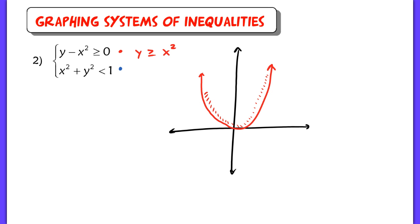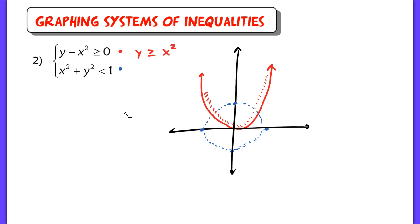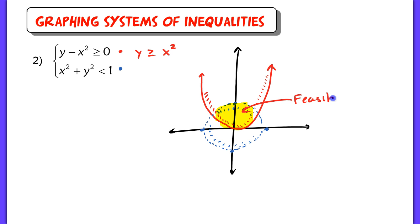The bottom inequality is a circle with a radius of 1. When I graph this, I should have a dashed line to represent the fact that this is just a less than symbol. I'm supposed to shade all of the points that are less than 1, which is going to be the inside of this circle. The sum of x squared and y squared less than 1 is the inside. What we are looking for in our feasible region is the overlapping region. These two overlap only within here, so this is the feasible region — all possible solutions to our system of inequalities.